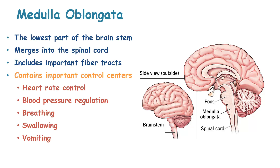The medulla oblongata is the lowest part of the brain stem, which merges into the spinal cord. It includes important fiber tracts and contains important control centers responsible for heart rate control, blood pressure control, breathing, swallowing and vomiting.